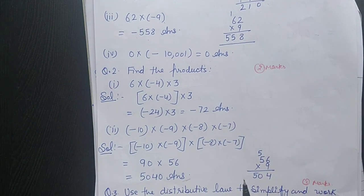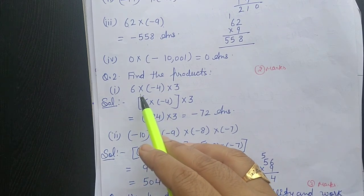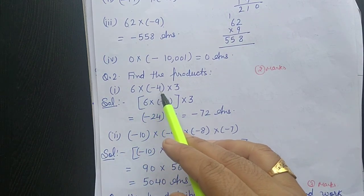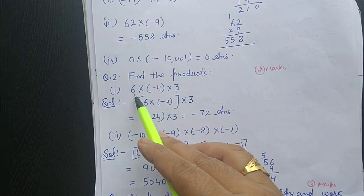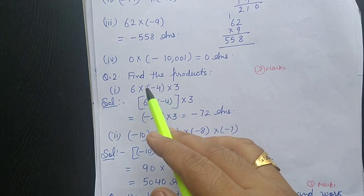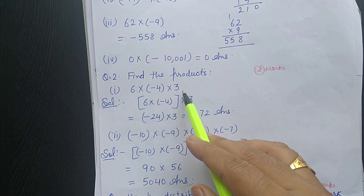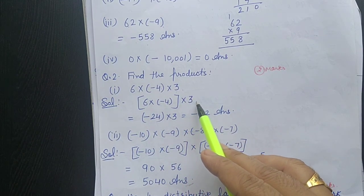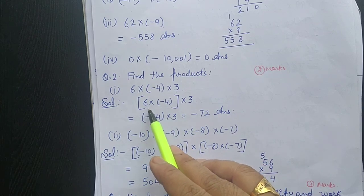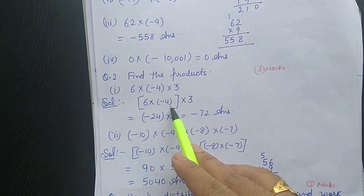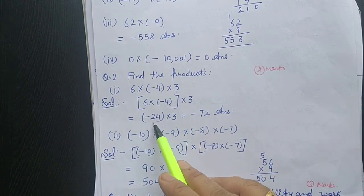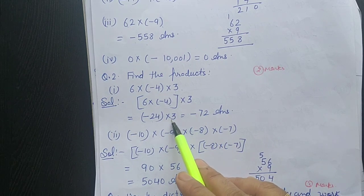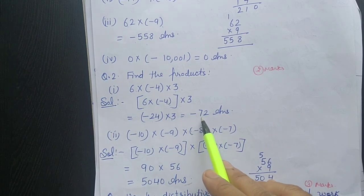Question number 2: find the product of 6 multiplied by minus 4 multiplied by 3. First we will multiply the first two numbers and then multiply the answer by the third number. 6 is positive, so 6 times minus 4 gives minus 24, then minus 24 multiplied by 3 gives minus 72.